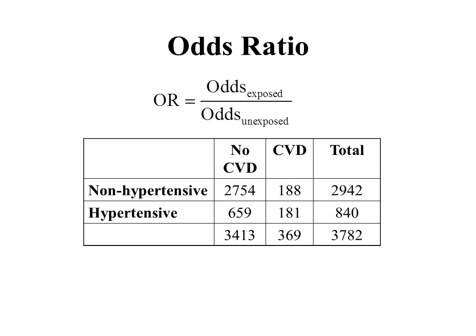To compare those two different groups of people, we can calculate the so-called odds ratio. This is another term that we're going to see come up frequently in our journal readings. The odds ratio is a commonly used way of comparing different groups of people. The odds ratio is calculated as the odds of the exposed divided by the odds of the unexposed.